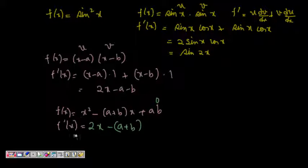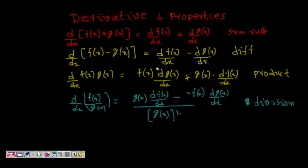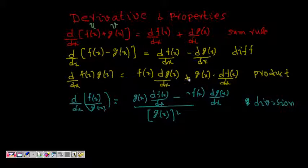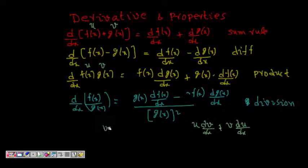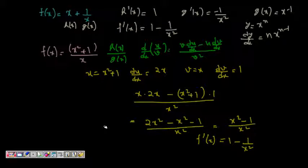This explains all four rules: the sum rule, difference rule, product rule, and division rule. You can write these using u and v notation, making them easier to remember. The product rule becomes u·dv/dx + v·du/dx — very symmetric. And the quotient rule becomes (v·du/dx minus u·dv/dx) divided by v². These four formulas give us the tools to find derivatives.